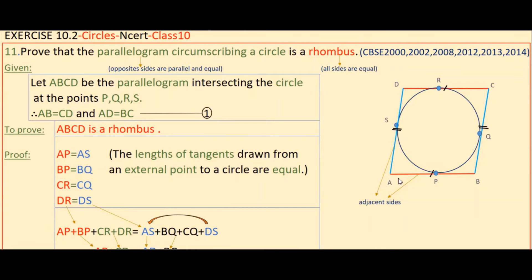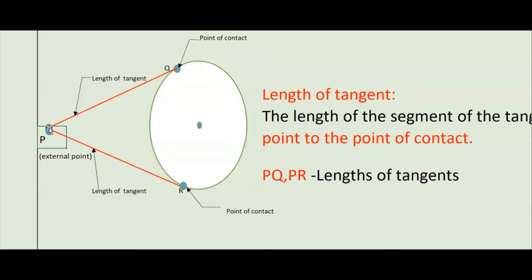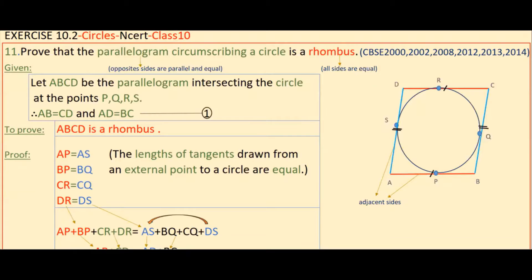So AP is equal to AS. Similarly, BP is equal to BQ, CR is equal to CQ, and DR is equal to DS — applying the tangent length theorem from each external point.